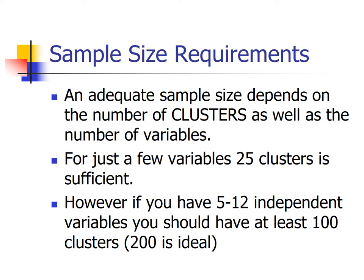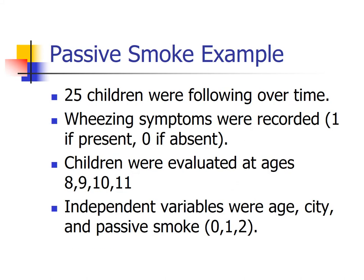In terms of sample size requirements, we typically talk about the number of clusters. How many clusters you need depends on how many variables you're putting in the model. For just a couple of variables, 25 is fine; but once you get into the 5 to 12 variable range, you want around 100 to 200 clusters. For example, if your clinical study has 100 patients each with 10 measurements, your dataset has 1,000 observations but your sample size is considered 100 — you have 100 clusters of observations.